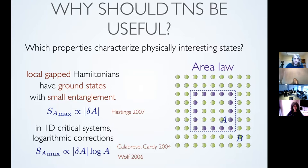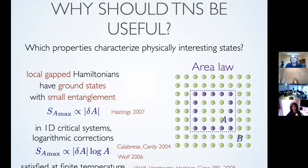In two dimensions, the area law is not proven. In one dimension, it is known how it is violated when the gap condition fails — in a critical system you have more entanglement, but only logarithmically in the partition size, which is still very small. There is also an area law for thermal states: even at finite temperature, there is a rigorous area law for local Hamiltonians. This is one of the key ideas to construct interesting tensor network ansätze, because if families already include this property, they capture the right amount of entanglement.